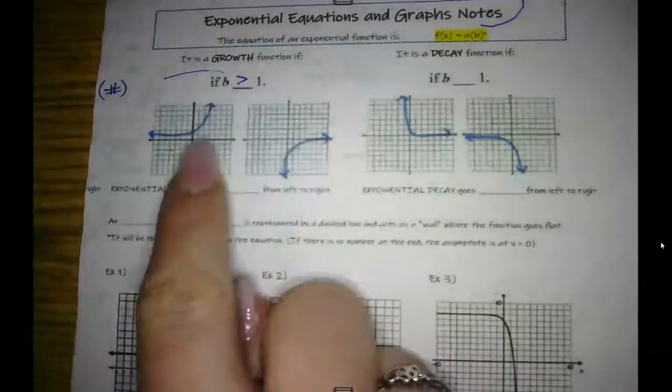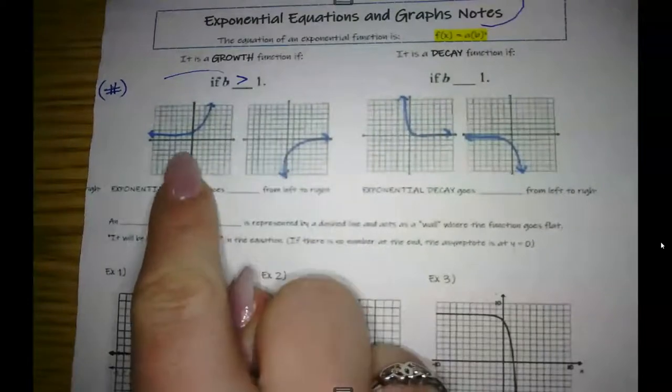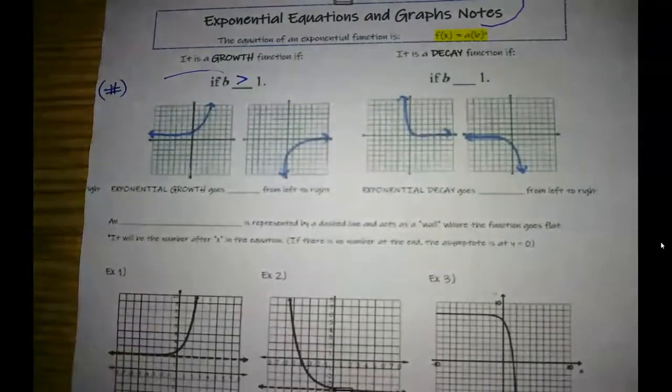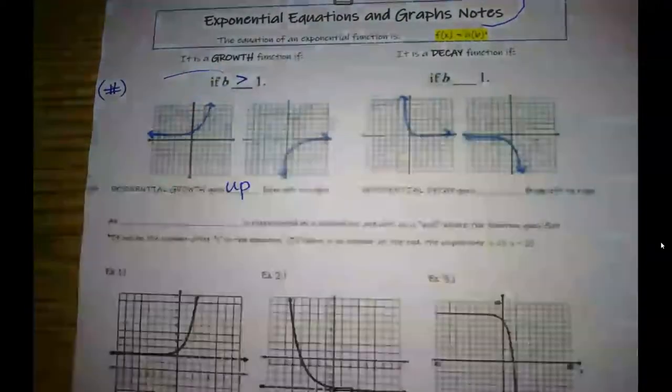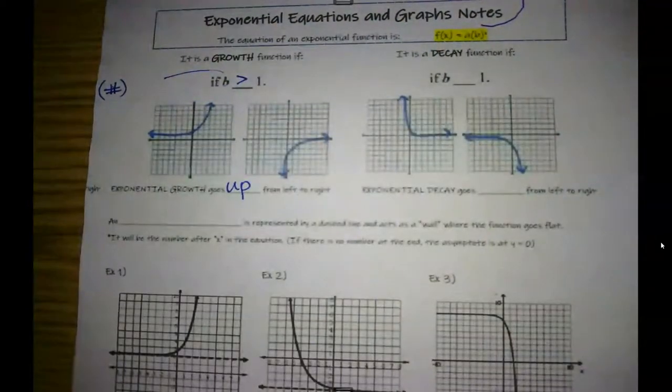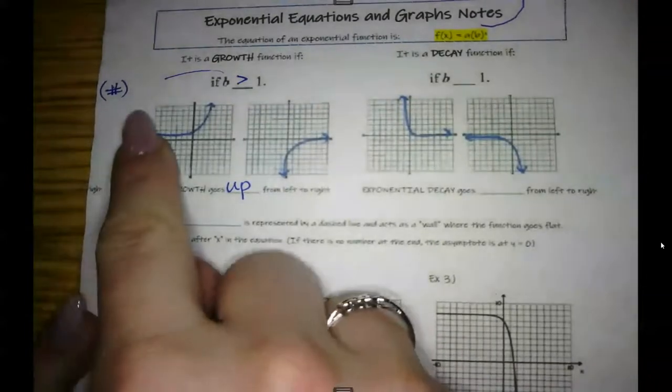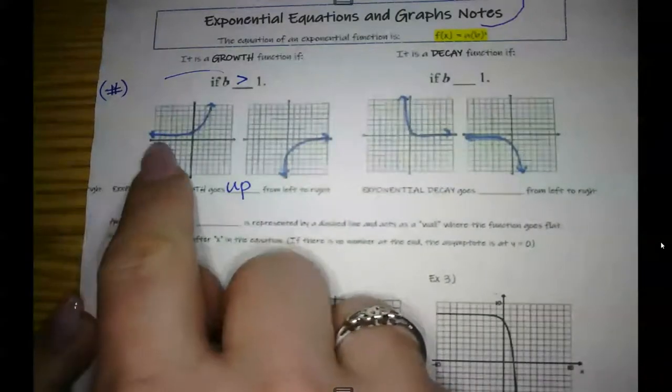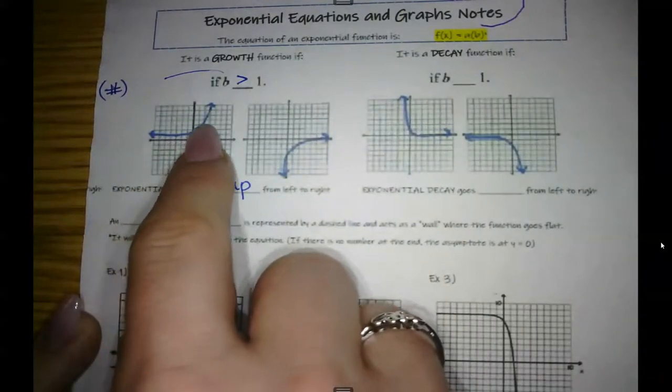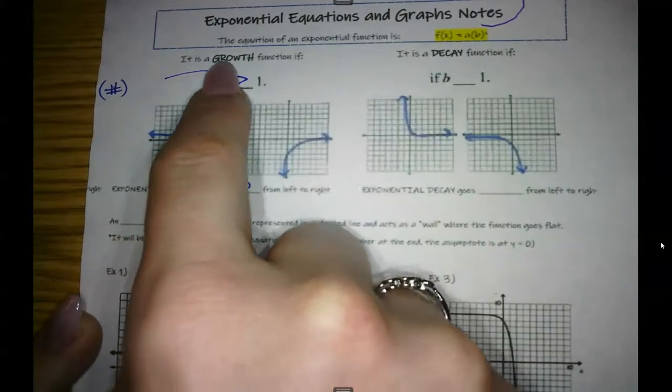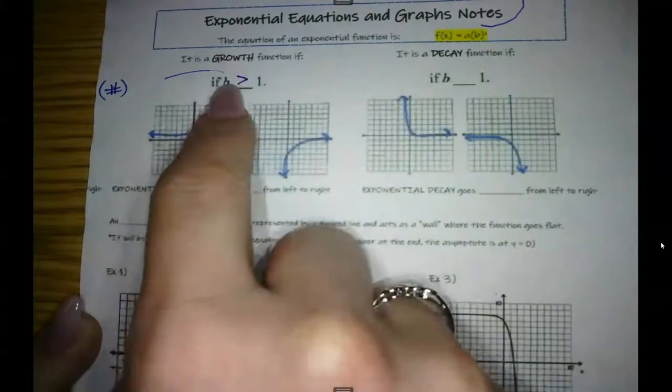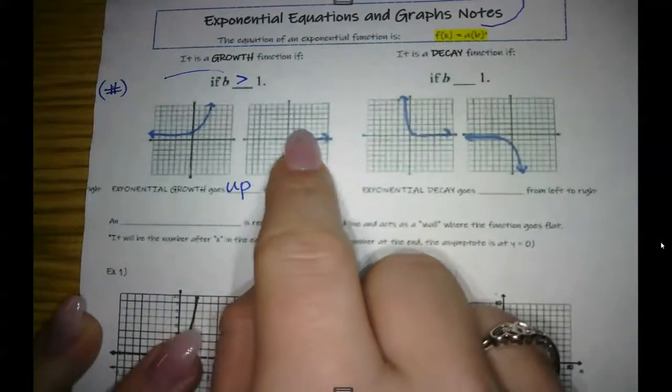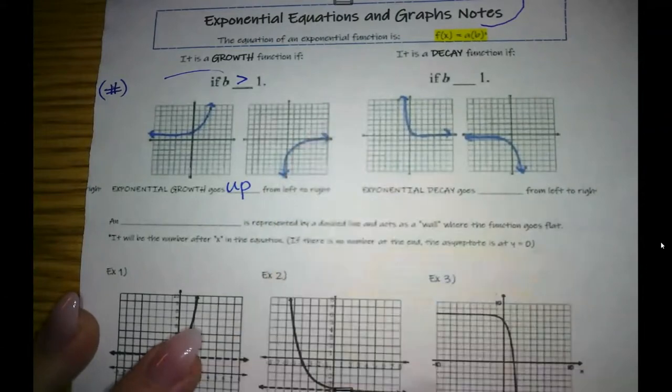And so let me show you, this is what our two different growth functions look like on the graph. And so an exponential growth goes up from left to right. So what I want you to do in order to determine whether these are growth or decay, I want you to start at the left side of your graph and take your finger or your fingernail and trace it and see which way you're going. Look, see how my finger is going up? It's going up. That means it's growth. I'm starting at the left and I'm going up with my finger. So that means it's growth.